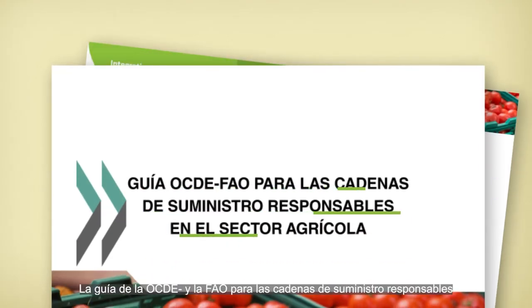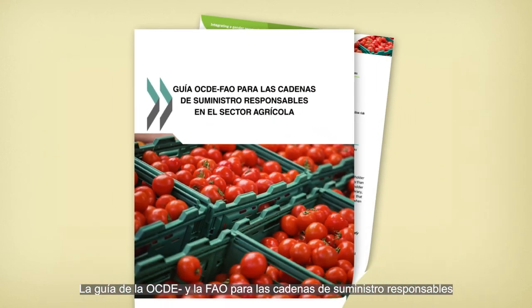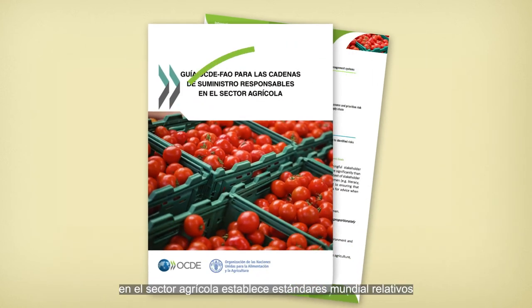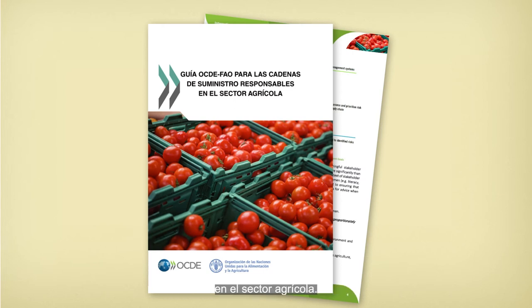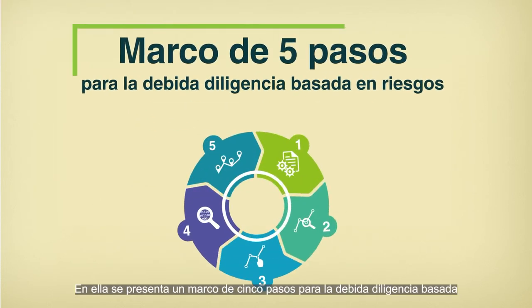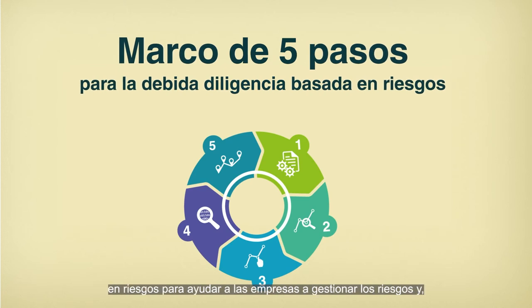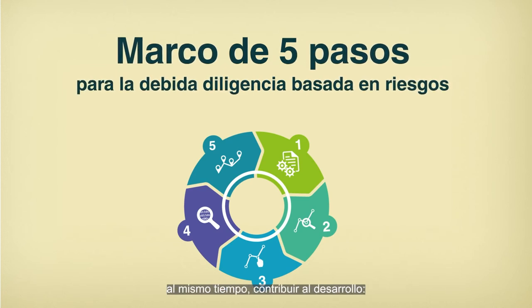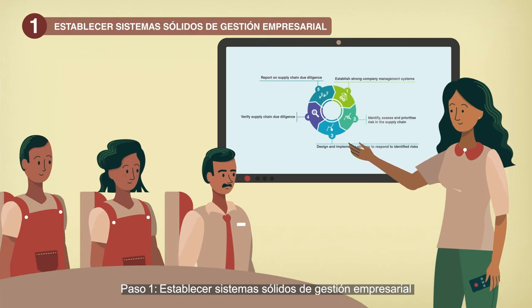The OECD FAO guidance for responsible agricultural supply chains is the global standard for responsible business conduct in the agricultural sector. It introduces a five-step framework for risk-based due diligence to support companies in managing risks while contributing to development.